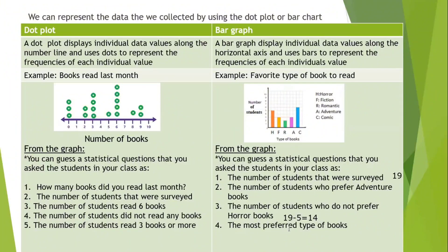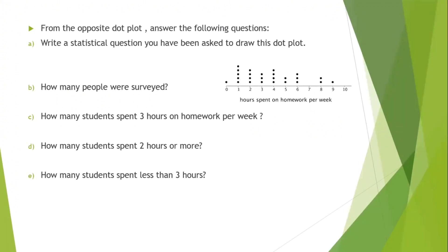Four, the most preferred type of books. The most preferred books is the comic. From the opposite dot plot, answer the following questions. The dot plot shows hours spent on homework per week. The number of hours that students spend per week to solve their homework. A, write a statistical question you have been asked to draw this dot plot. The question is: how many hours do students spend doing homework per week?